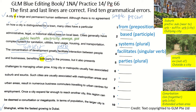It also presents challenges to managing urban growth. A big city or metropolis usually has associated... The word 'urban' tells you it relates to a city, and the word here should be a noun form. The noun form for 'grow' is 'growth' — G-R-O-W-T-H. Noun form.